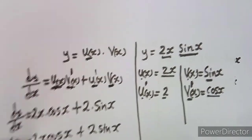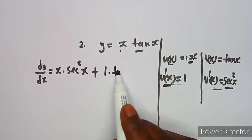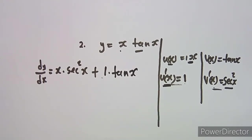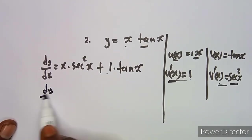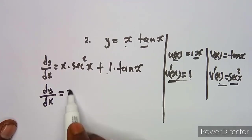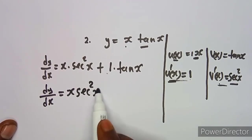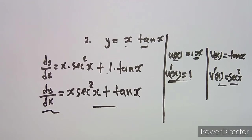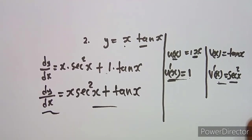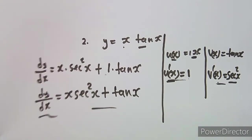...plus V(x) times U'(x), which is tan(x) times 1. So we can write the final answer as x·sec²(x) + tan(x). That's how you apply and simplify using the product rule when you have two terms multiplying each other. That was question number two.